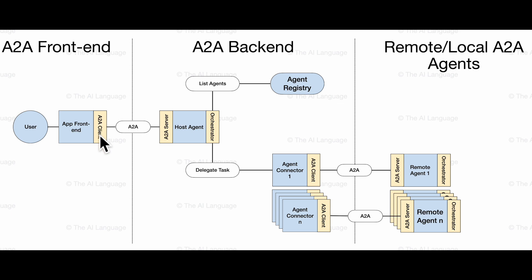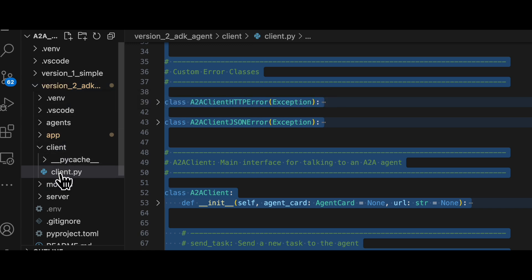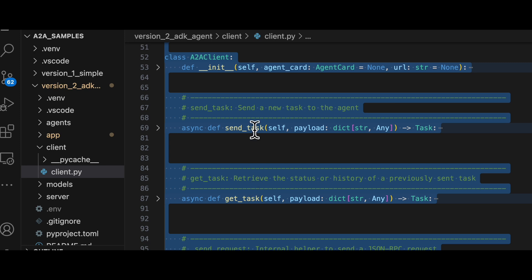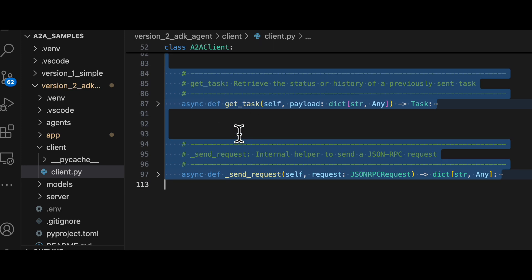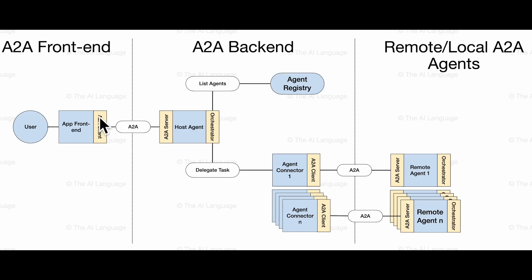We've already coded the A2A client in our last video. We have version 2 of our A2A agent system — version 2 ADK agent — which has a client.py. This client can help you send a task to the server and get the response back. This A2A client helps us connect to the A2A servers. The user can then interact with that app and type in a query for the A2A client to process.